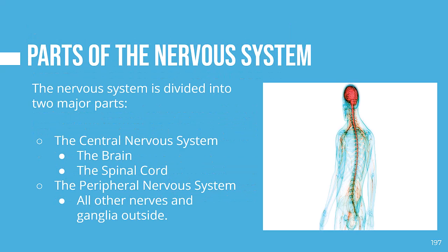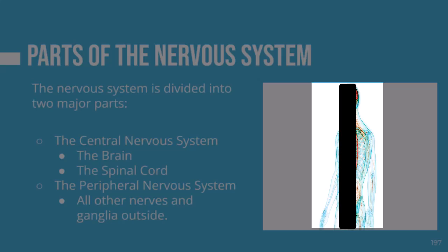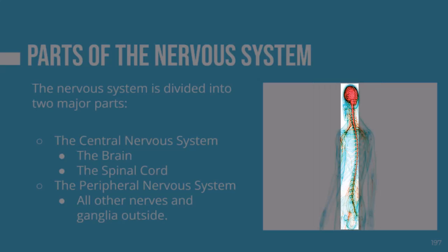When studying the anatomy of the nervous system, we need to think of it as divided into two major parts. One part is the central nervous system, comprised of the brain and the spinal cord. The peripheral nervous system includes all other nerves in the body and the ganglia outside of them. In this illustration, the brain and spinal cord are shown in a reddish color and everything else is in a bluish color. We're going to focus on the central nervous system in this video.